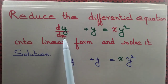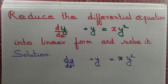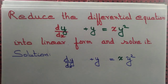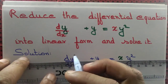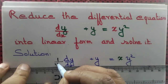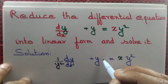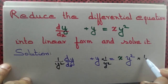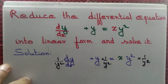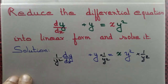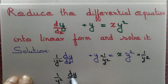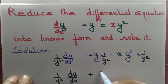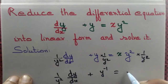Let us reduce the differential equation dy/dx + y = xy² into linear form and solve it. First step, we divide throughout by y². So that gives us (1/y²) dy/dx + y⁻¹ = x.